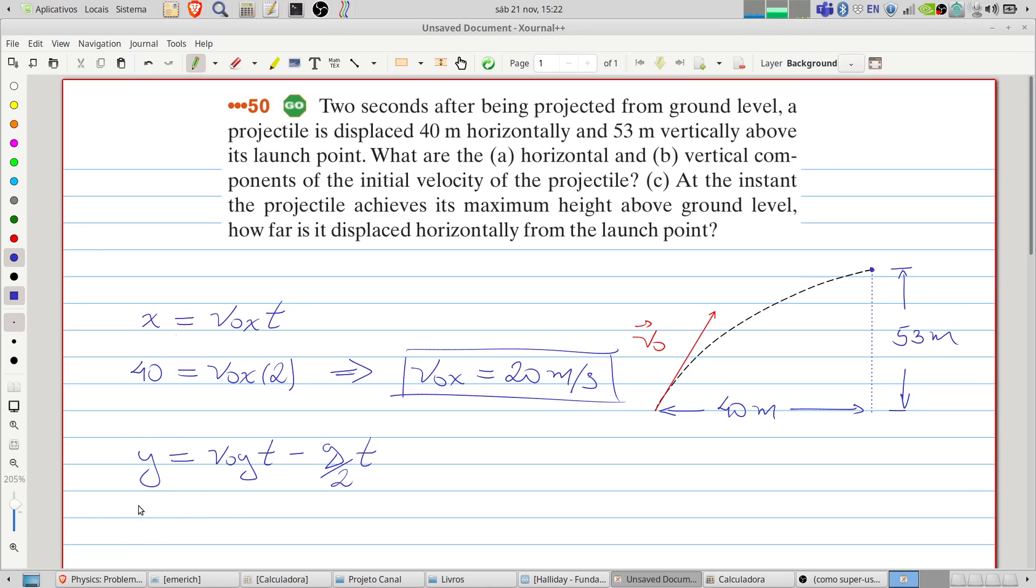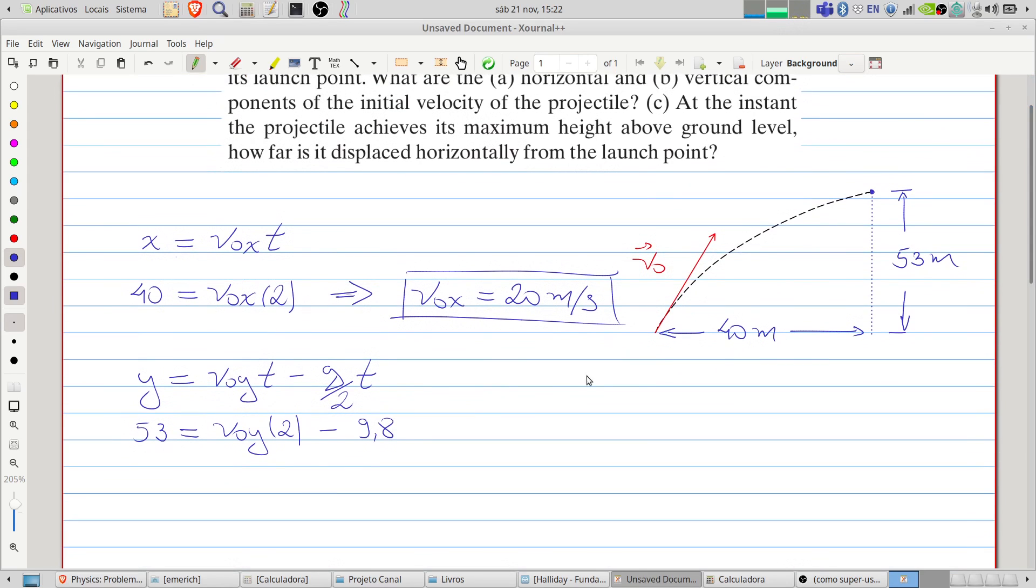Here we have 53 meters equals the initial velocity times 2 seconds minus 9.81 divided by 2 multiplied by 2 squared. Here we have squared, I almost forgot. Solving this equation, we will find the component y of the initial velocity.